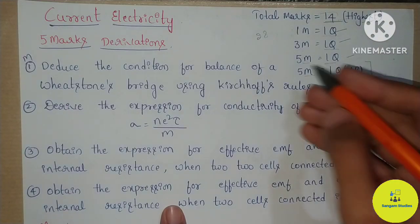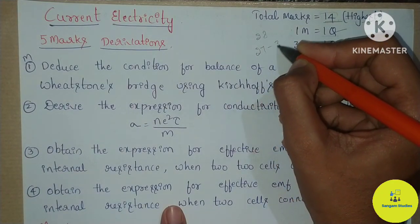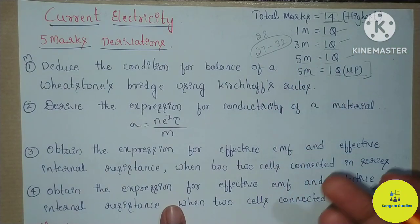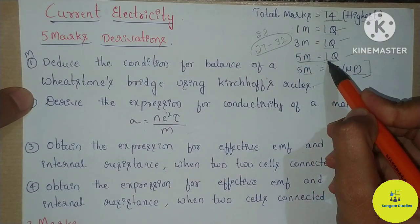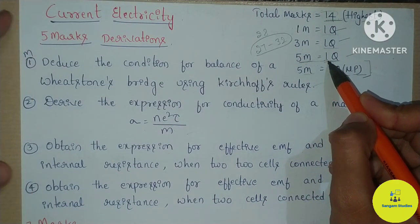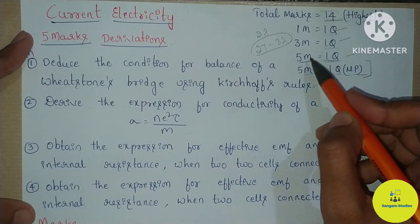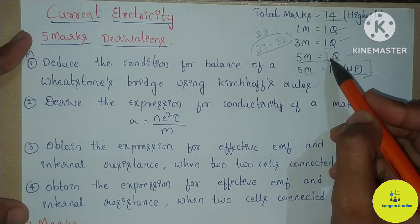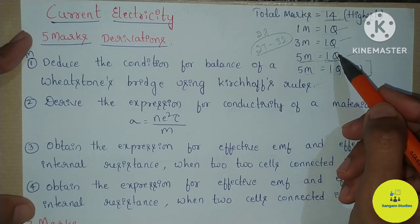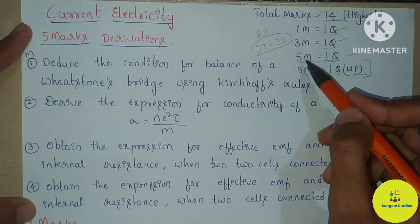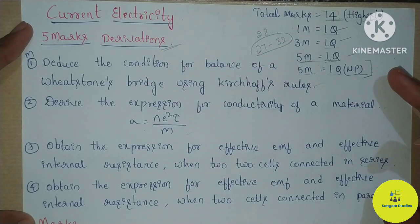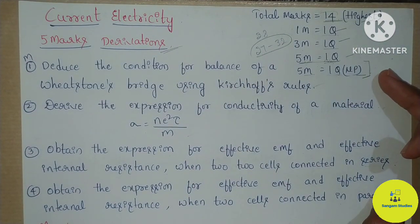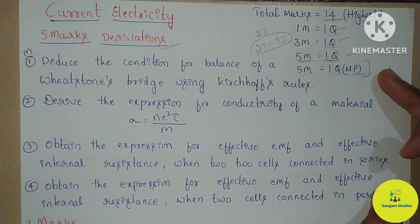3 marks are the highest marks in between 27 to 32 marks in the mid-term examination. In this chapter there are chances — in the mid-term examination there are 5 mark questions, 1 or 2 questions depending on the district. In the 5 marks section, there are derivations — 4 derivations total, which are very important.